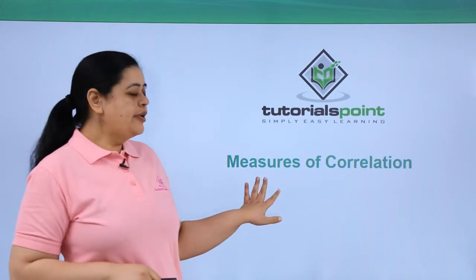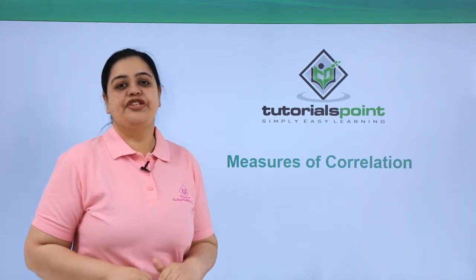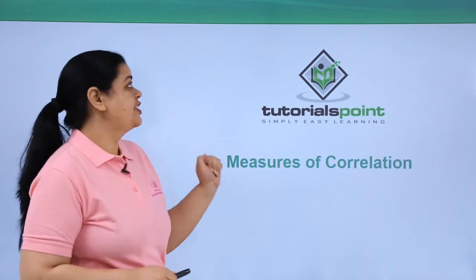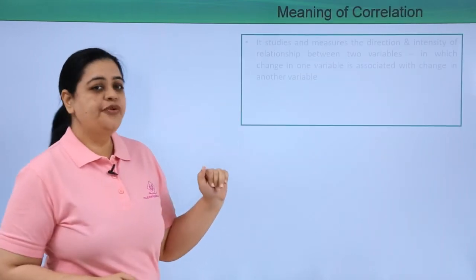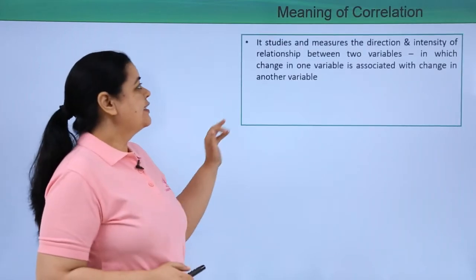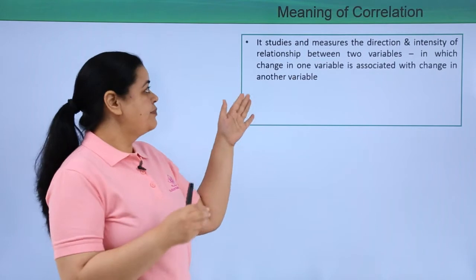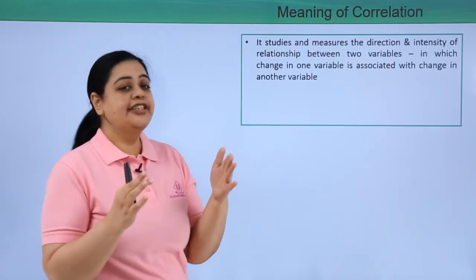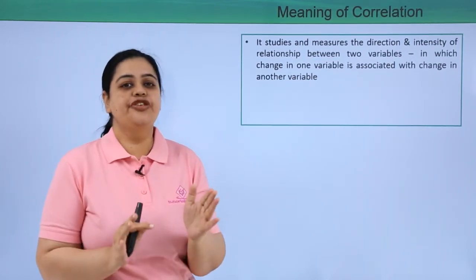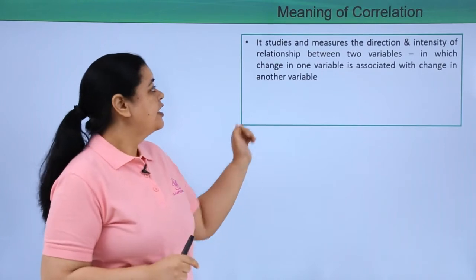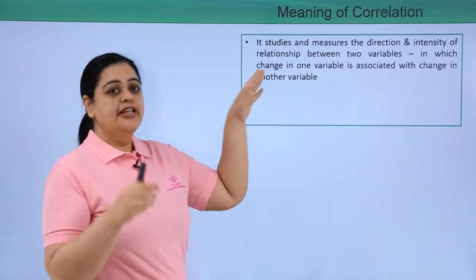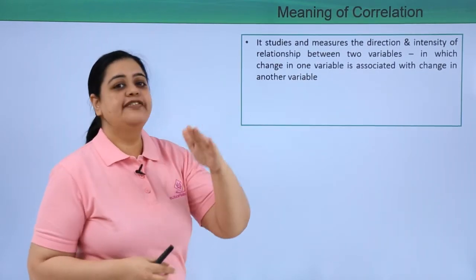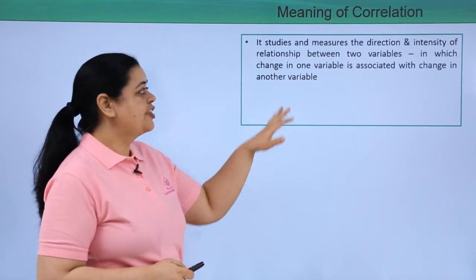Let us now understand the measures of correlation after we have understood measure of dispersion. Measure of correlation studies and measures the direction and the intensity of relationship between two given variables, in which change in one variable is associated with change in another variable.